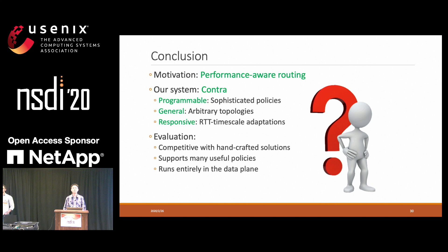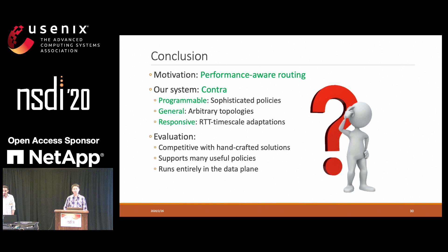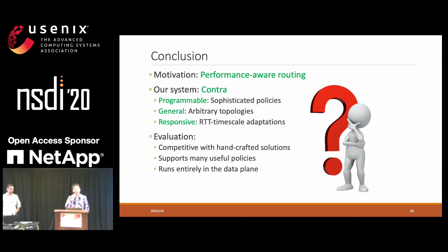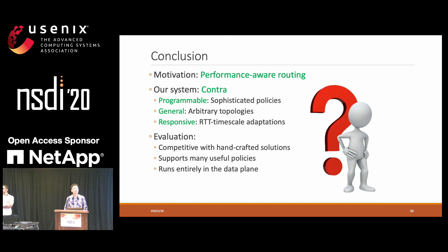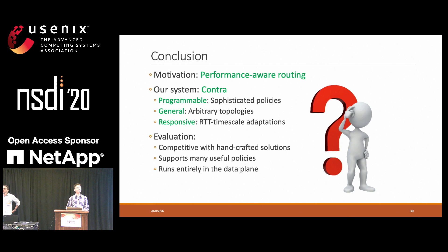Q: Have you given any thought to how you would gracefully evolve a Contra program without shutting the whole network down — for example, if I change one line in my Contra program, what happens? A: You need to reinstall the whole switch programs when you recompile the policy, so we need to shut down the network and put everything back. I haven't given thought to incremental compilation or how to incrementally update the compiled version on the switches. I agree that is interesting future work, but the current system does not support this.